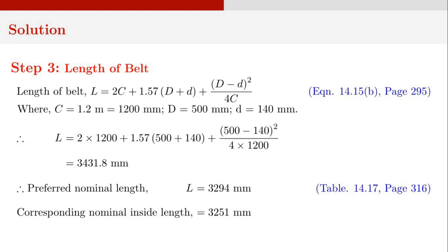In the next step, we find out the length of the belt. The equation for belt length is given as equation 14.15B on page 295. The length of the belt L equals 2C plus 1.57 times (D plus d) plus (D minus d) squared divided by 4C. With C equal to 1200 mm, D equal to 500 mm, and d equal to 140 mm, substituting these values we get L as 3431.8 millimeters.